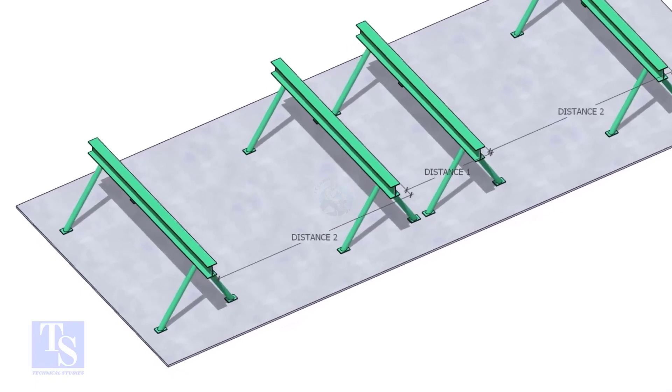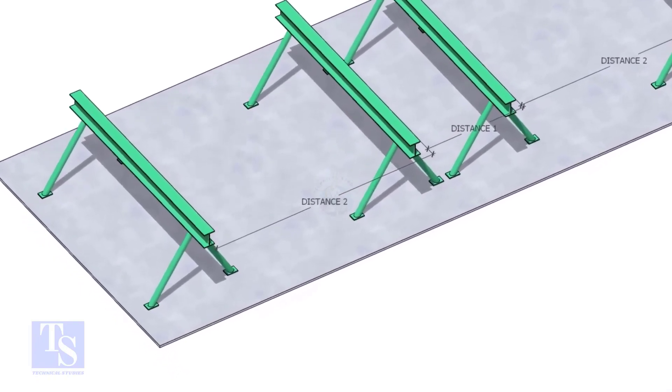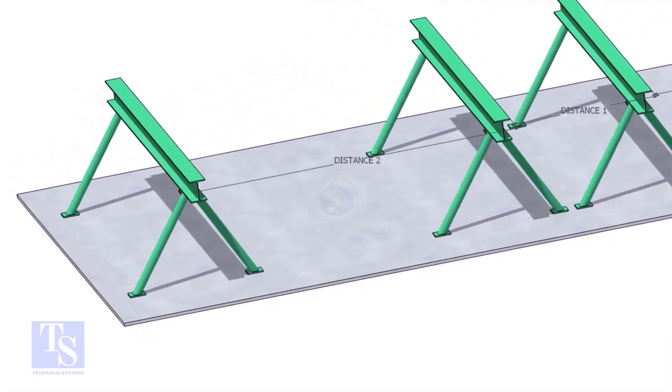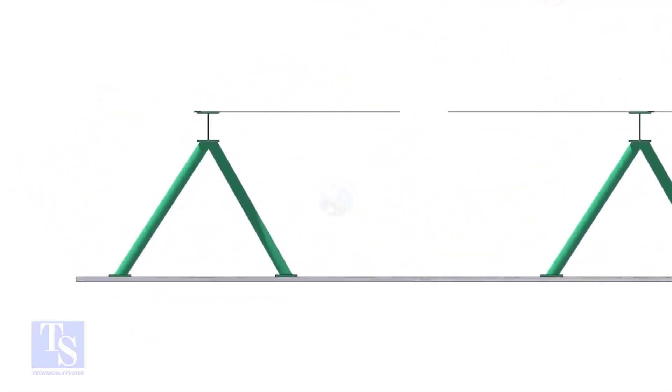Distance 1 shall be 1 meter to 1.2 meters, and distance 2 shall be 2 to 2.5 meters, less than the random pipe.